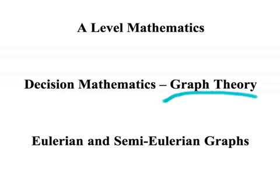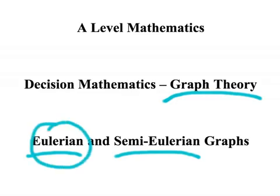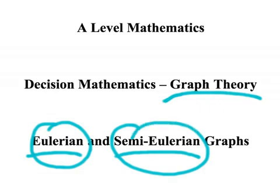Today we're going to be looking at a small aspect of graph theory, specifically definitions of whether graphs are Eulerian or semi-Eulerian. A key part of this presentation is being able to look at a graph and make a decision about whether it is Eulerian or semi-Eulerian. These definitions are important in their own right, but this theory also has applications when we study network algorithms, and very specifically the Chinese Postman algorithm.